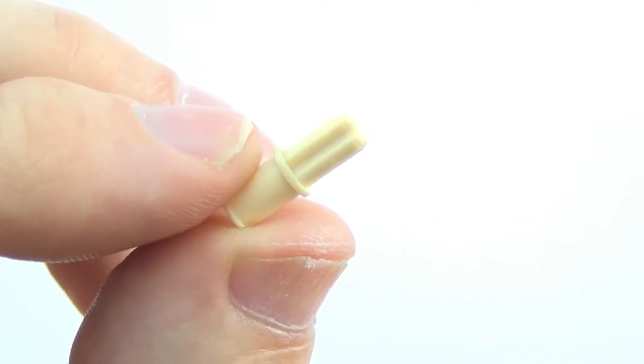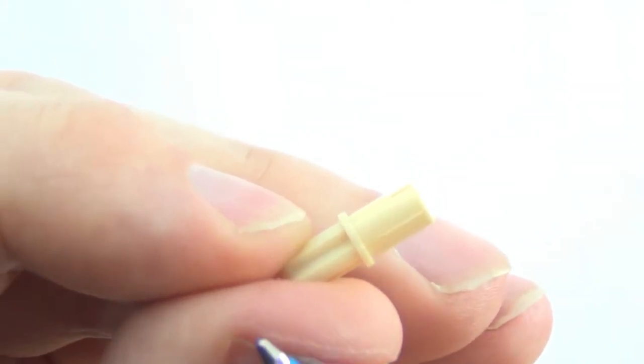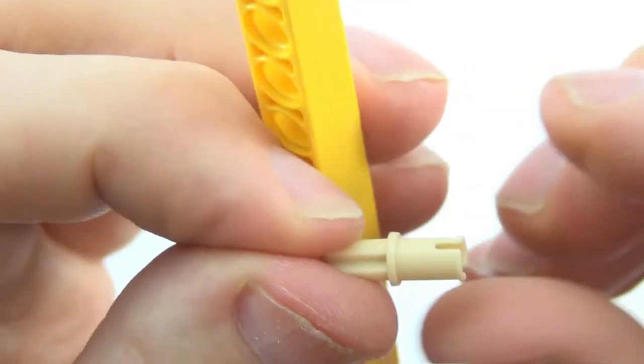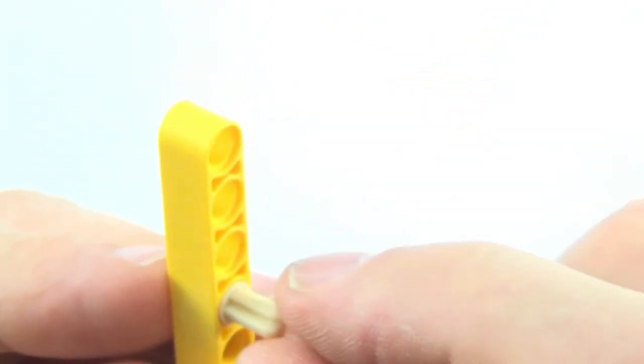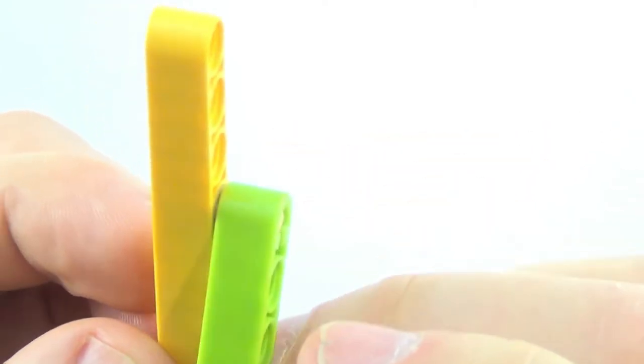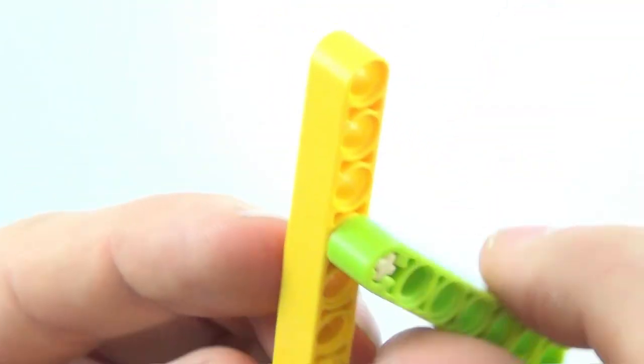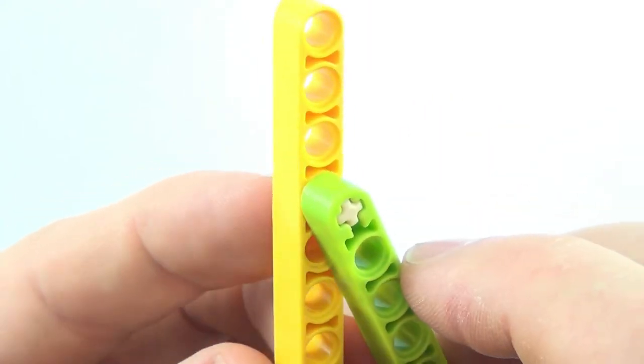Technic axle pin without friction ridges. Similar to the previous pins, there is no friction ridges on these. When you connect it into a Technic lift arm and connect your axle end to an axle part of a lift arm, you can see it moves quite freely in a similar sort of way to the other pins without friction ridges.